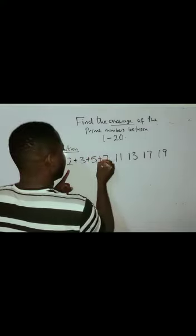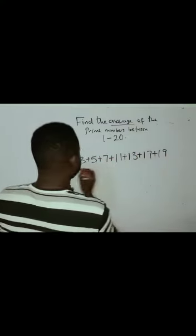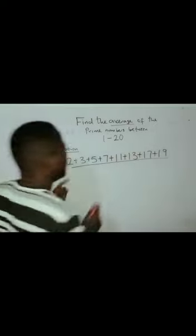We are going to add them: 2 plus 3 plus 5 plus 7 plus 11 plus 13 plus 17 plus 19, divided by the numbers.